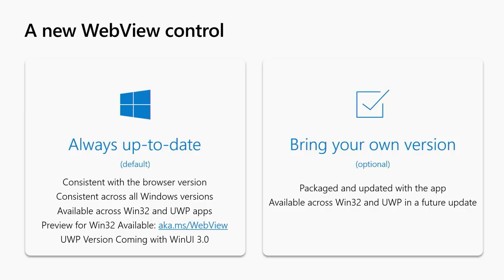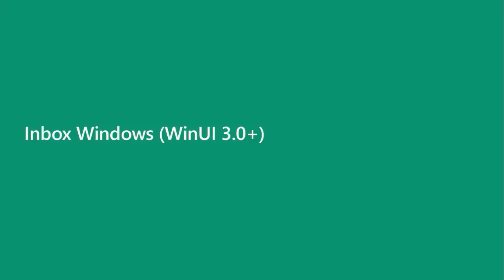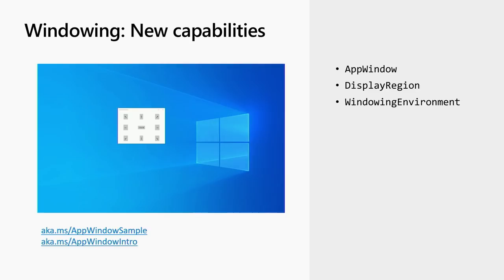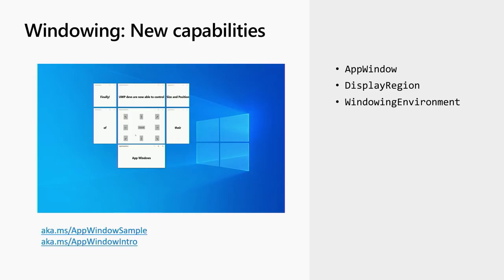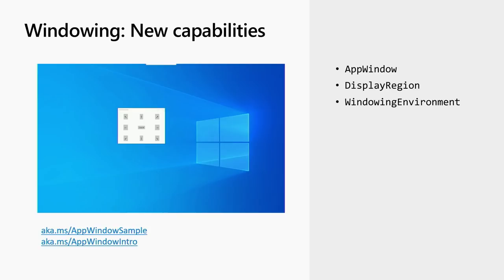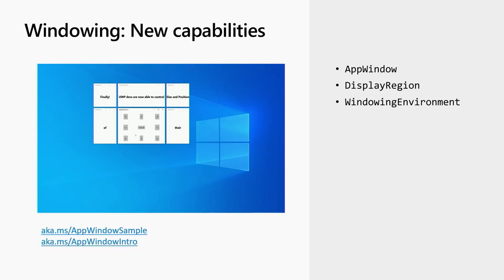We know compatibility is important, so we're also working on a bring-your-own version of these controls — this will allow you to lock to a particular version of the browser inside your app and make sure your WebView ships with that version. You'll still be able to use the existing WebView if you're using it today — these are just options we're adding for those who want to take advantage of the new web capabilities. Beyond some of the new controls, there are also some features we're adding to inbox Windows. In 1903, one of the big things for UWP developers is new windowing capabilities. With the addition of AppWindow, UWP developers can now size and position multiple top-level windows for their UWP application.